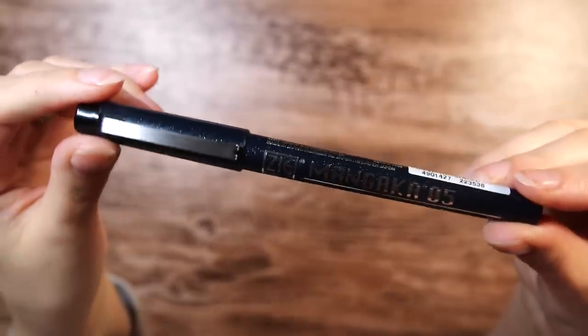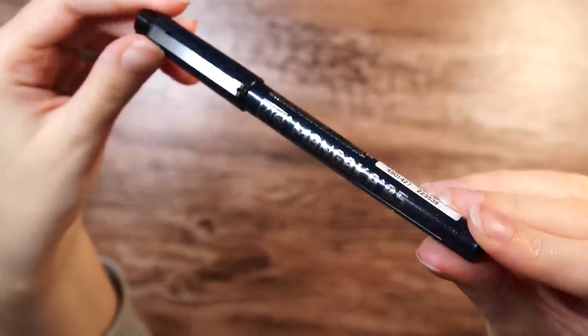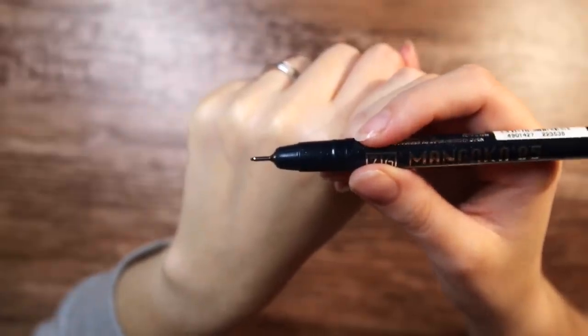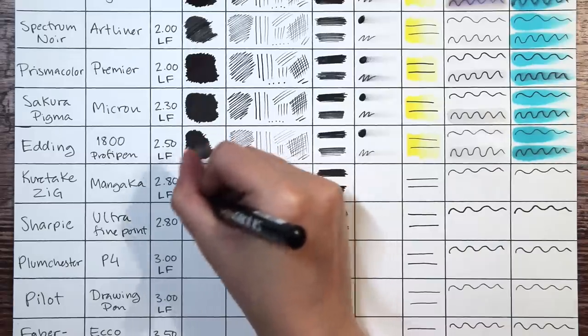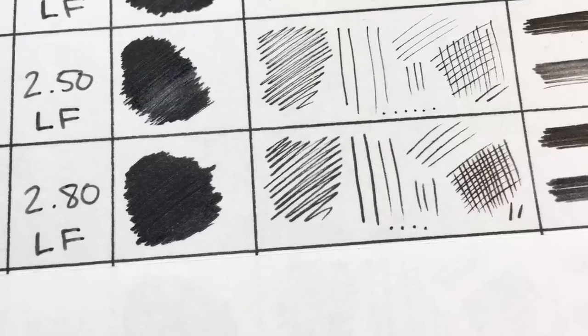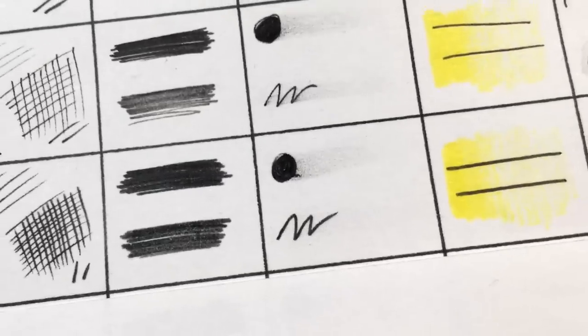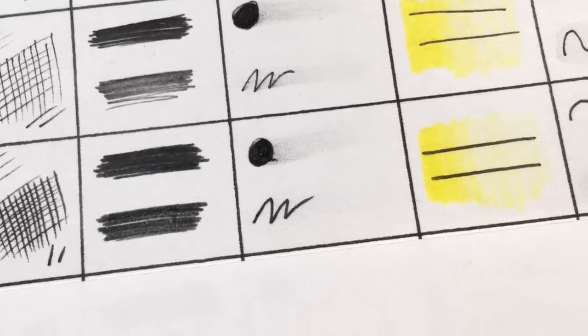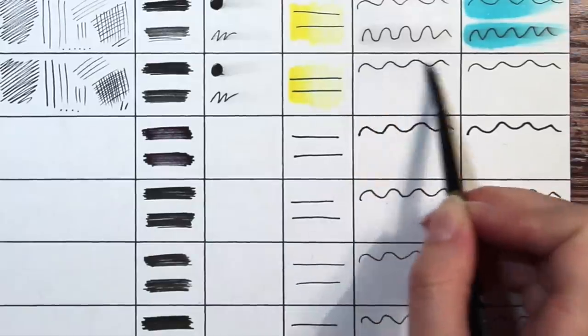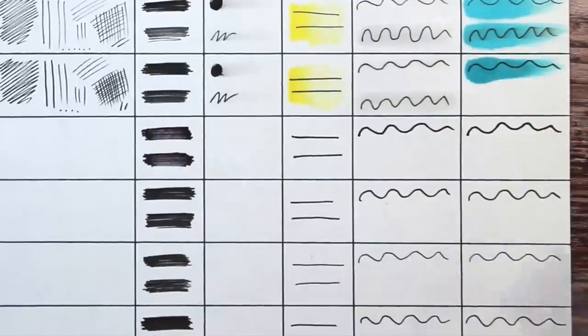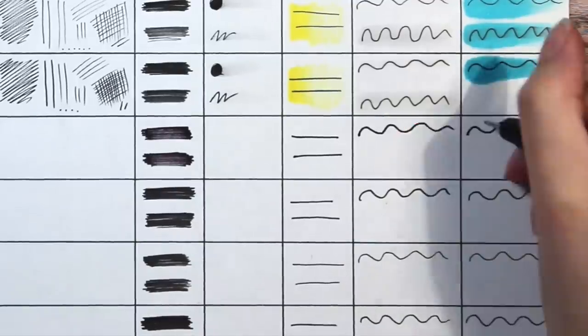Then we have the Kuretake Sigma mangaka pen for about $2.80 and it's lightfast. It looks smooth and pigmented and the lines turn out fairly crisp I think. It does fade just a little in the eraser test but there is almost no smudging happening. It passes both on the water and the alcohol test and it barely smudged on the fresh line water test.